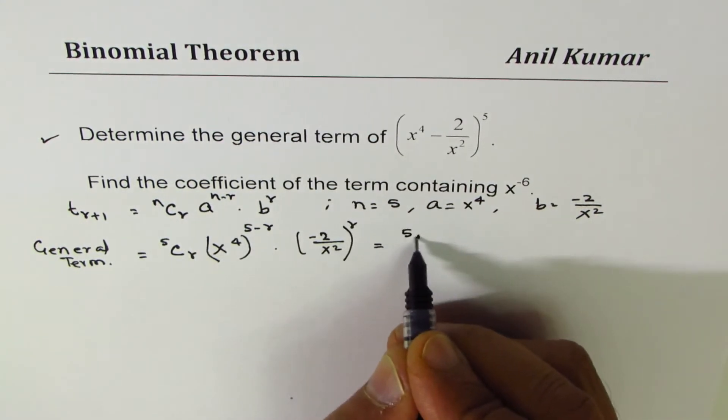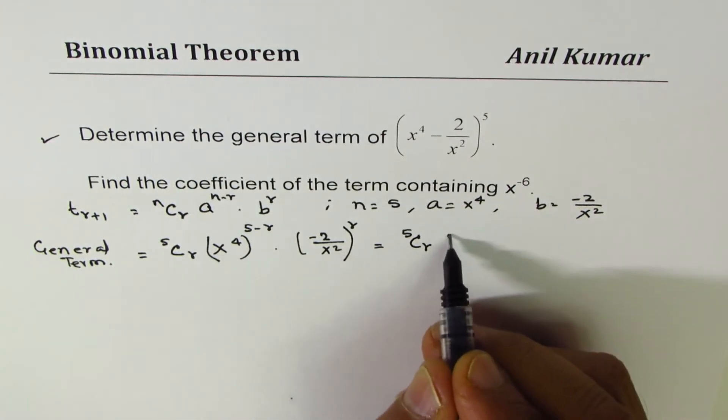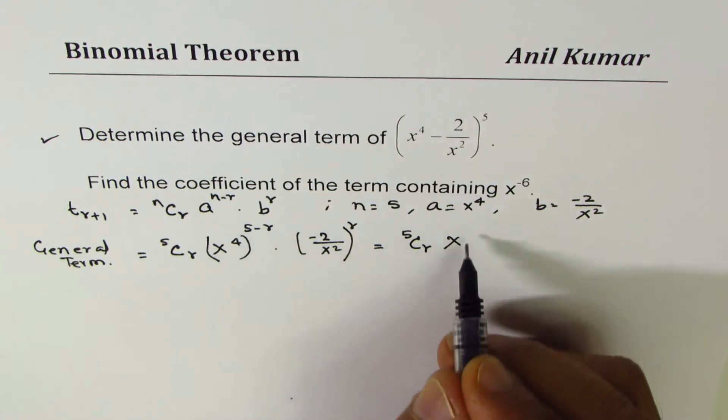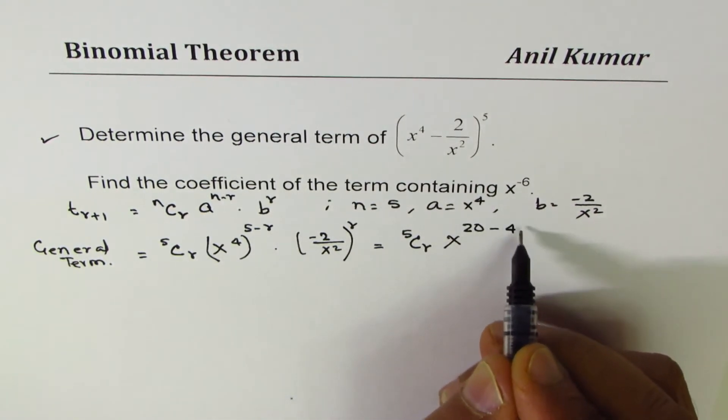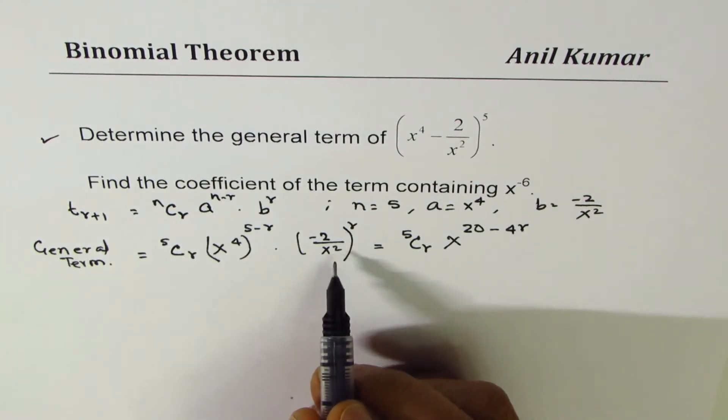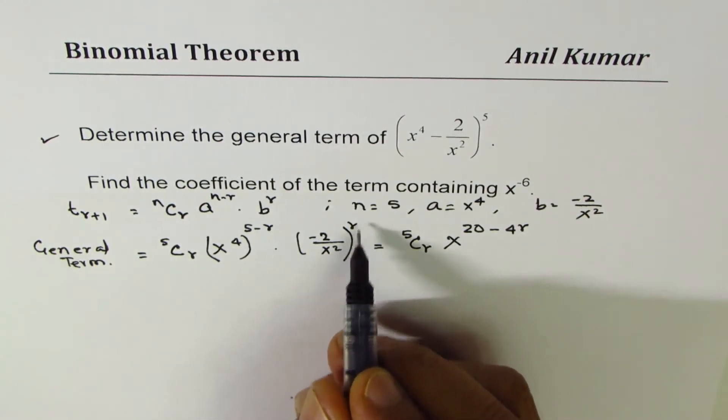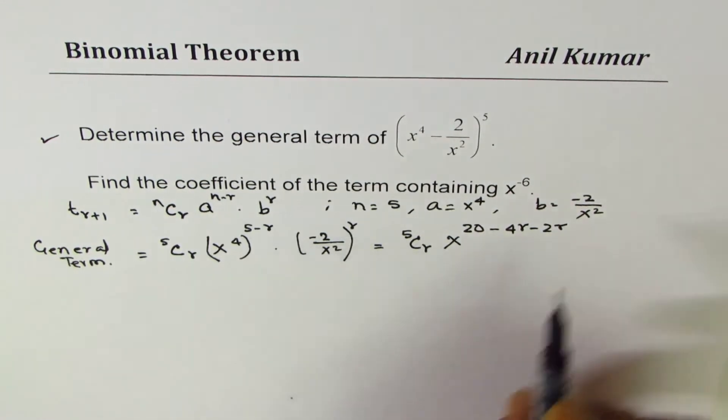So let's simplify this. We could write this as 5Cr x to the power of—x^4 times 5 is 20 minus 4r—and here we get x^(-2r).